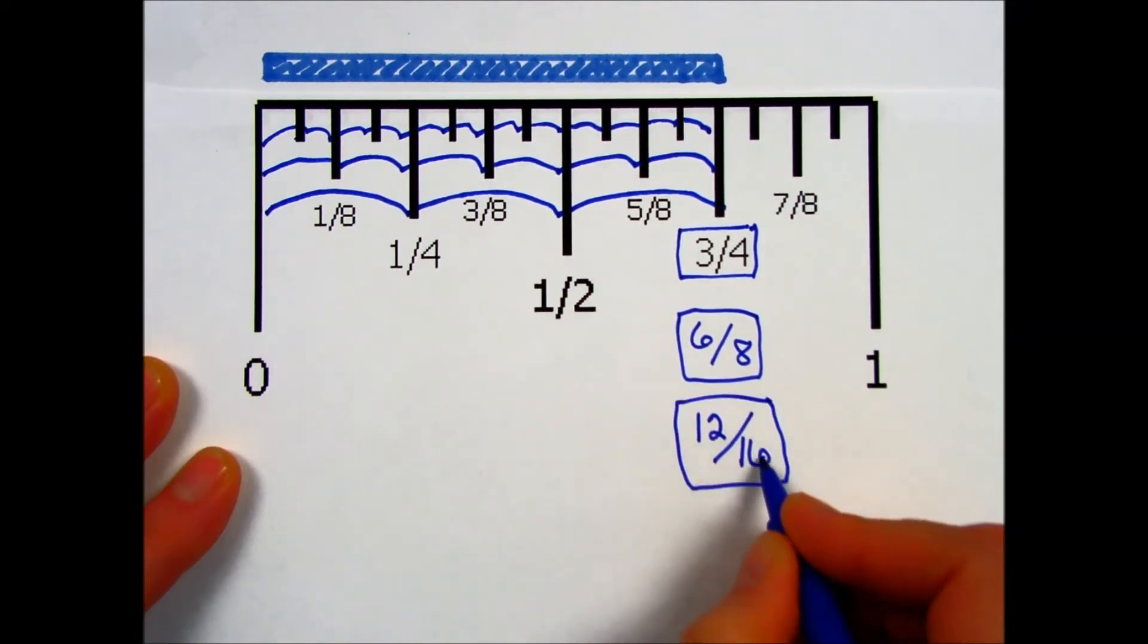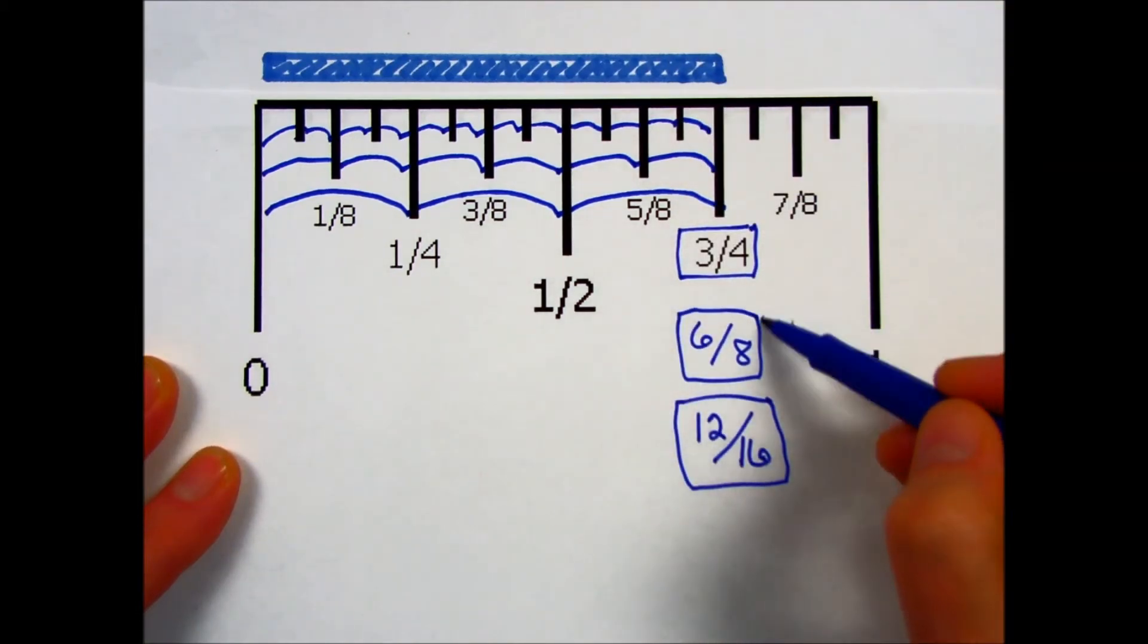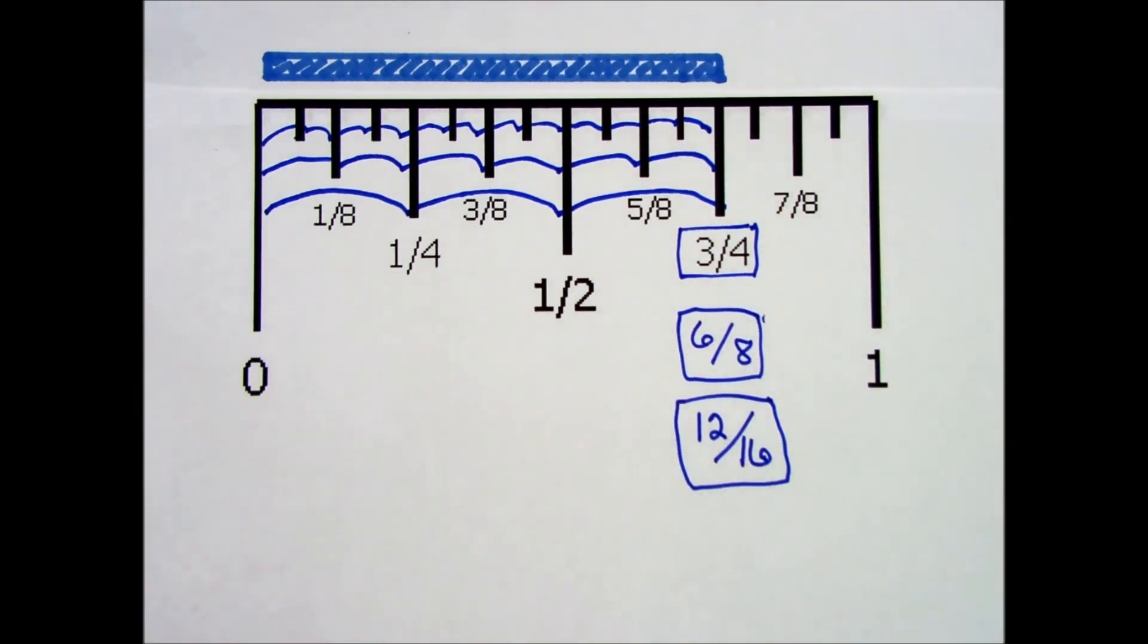These are all measuring the same object, having the same length, but writing them with different denominators. And you'll see we got the same answers as we did using the mathematical method.